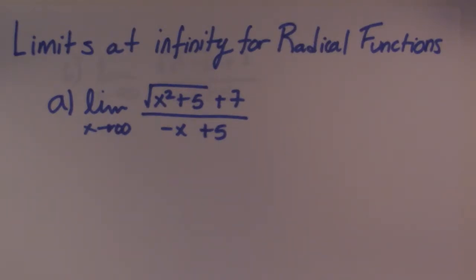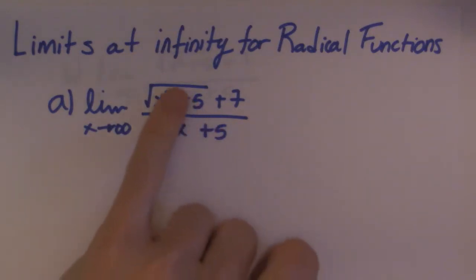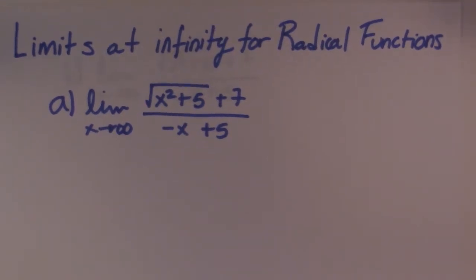I did a video on limits at infinity for rational functions. So I'm going to call these radical functions, which I don't know is entirely true. I've heard them called quasi irrational functions. But basically, I'm just saying that these have a radical in them. Therefore, we have to sort of treat these differently than rational functions. Alright, so let's go ahead and have a look at this guy.